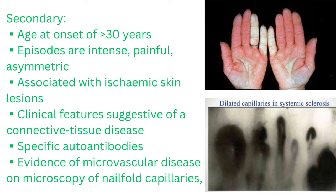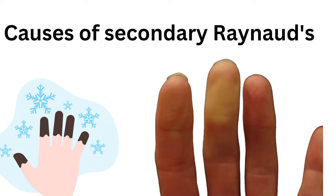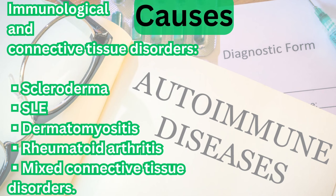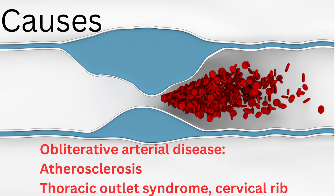Secondary Raynaud's, unlike its primary counterpart, arises as a result of various underlying conditions. These include a range of autoimmune disorders such as rheumatoid arthritis and inflammatory myopathies. Additionally, arterial occlusive syndromes like atherosclerosis and acute artery occlusion, along with Buerger's disease due to smoking, are implicated as causative factors. These conditions highlight the intricate connection between vascular health and immune function.